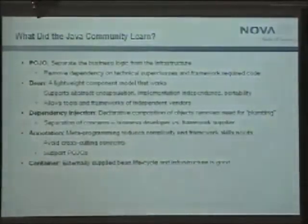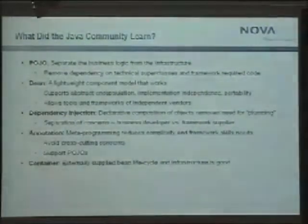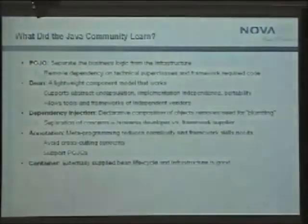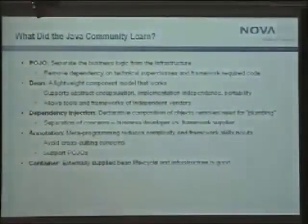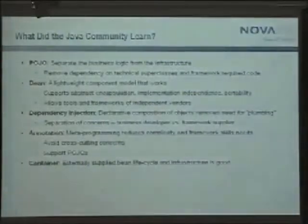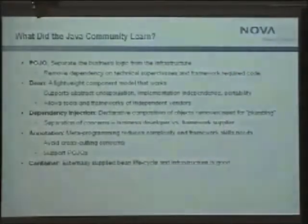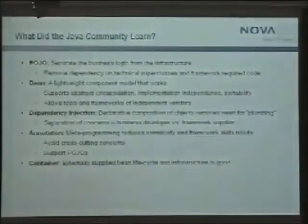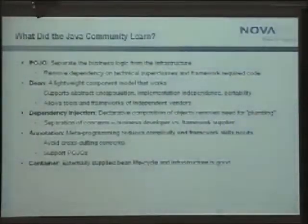What did the Java community learn? First: POJOs — plain old Java objects. They learned to separate business classes from the additional infrastructure information needed to run them in a specific environment — like technical superclasses, similar to VisualWorks data lenses. They learned it's bad to have framework-specific code in your business objects, because it makes them completely non-portable. Modularity is important: business logic should not contain any information about the technical infrastructure it runs in.